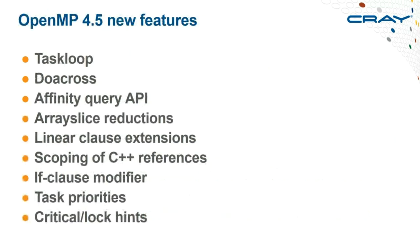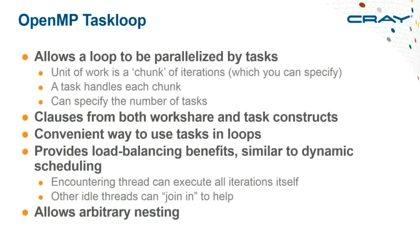CCE 8.6 added more OpenMP 4.5 features. The taskloop construct is notable — it allows parallelizing a loop using tasks within a parallel thread team. You can add clauses from either workshare or task constructs. This is a convenient way to use tasks to break up a loop structure without manually passing loop indices into tasks. You can specify either chunk size in the iteration space or the number of tasks.